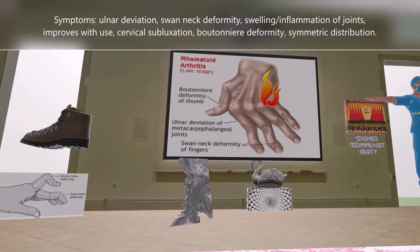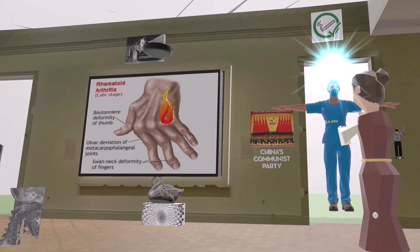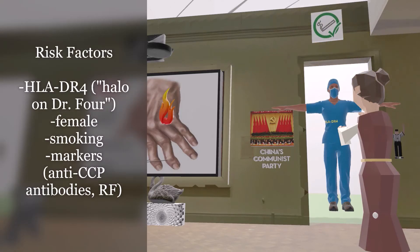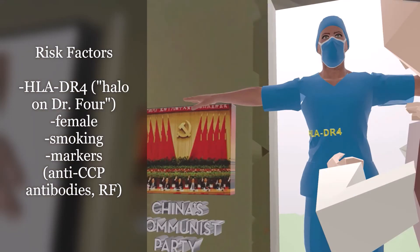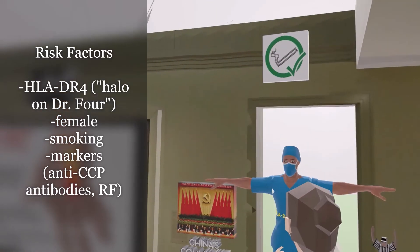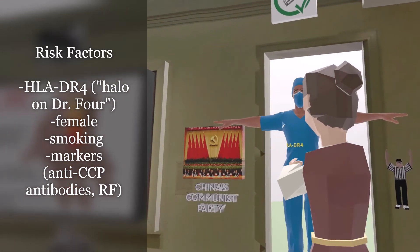Let's look at risk factors of rheumatoid arthritis. There is a lady noticing a doctor at the door who always has a halo on his head — halo for HLA, doctor at the door for DR4 — reminding us that rheumatoid arthritis is associated with HLA subtype DR4. The lady reminds us that females are more prone in a 3-to-1 female-to-male ratio. A 'yes smoking' sign reminds us that smoking is associated with the development of rheumatoid arthritis.